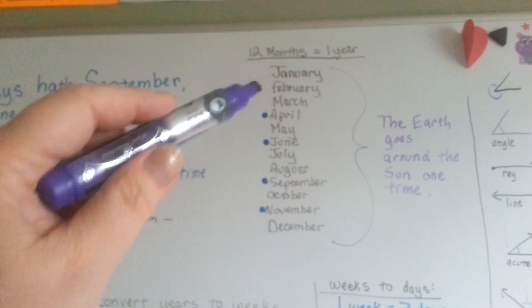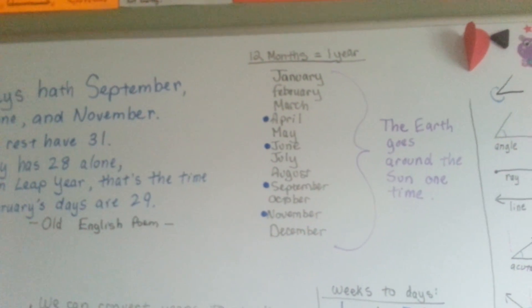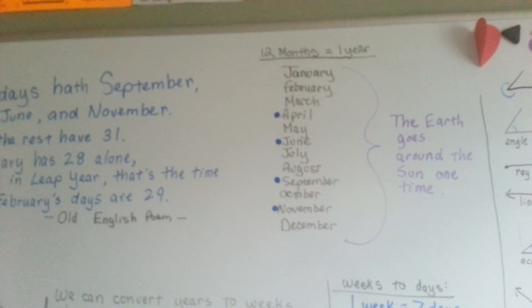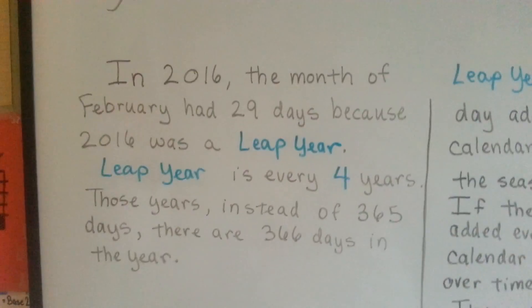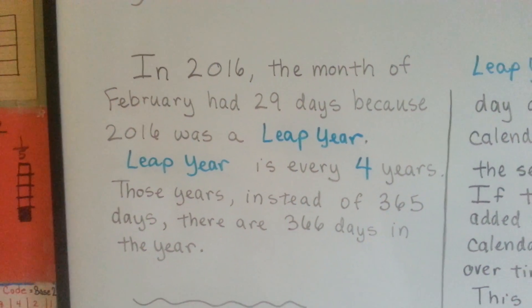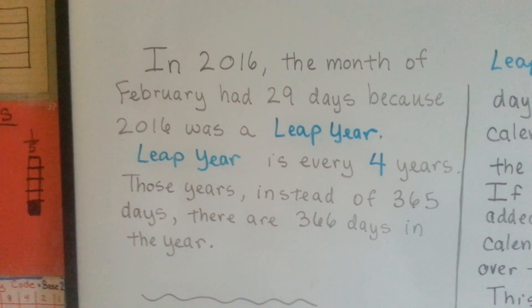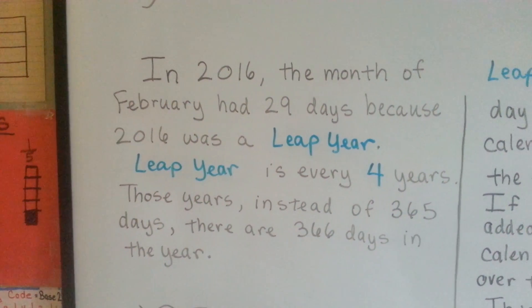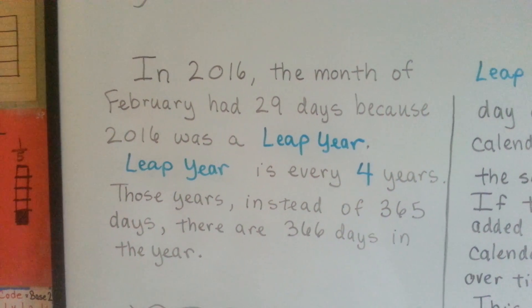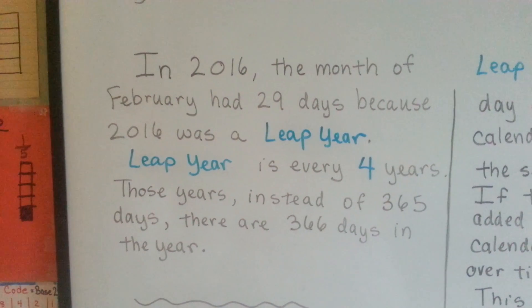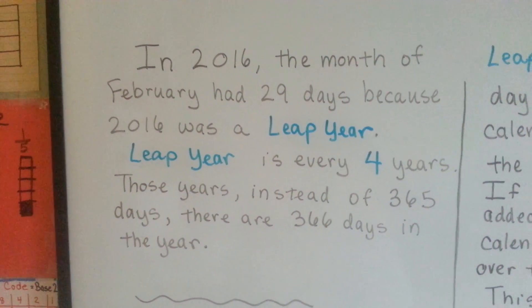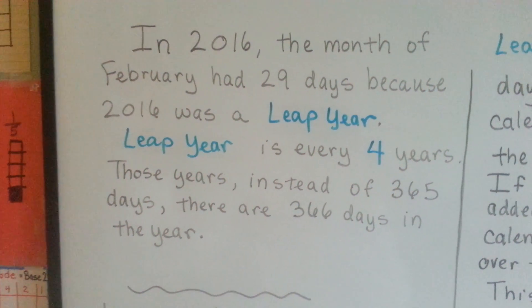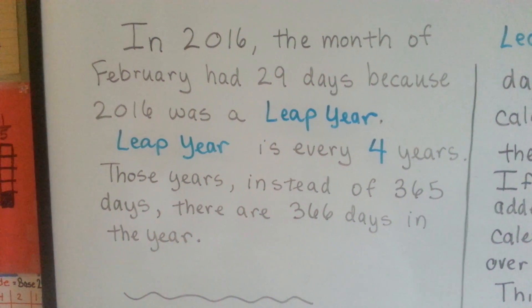One year is the time that the Earth goes around the sun one time. In 2016, the month of February had 29 days because 2016 was a leap year. Leap year is every four years, so the next one was going to be in the year 2020. These years, instead of 365 days, there are 366 days in the year.